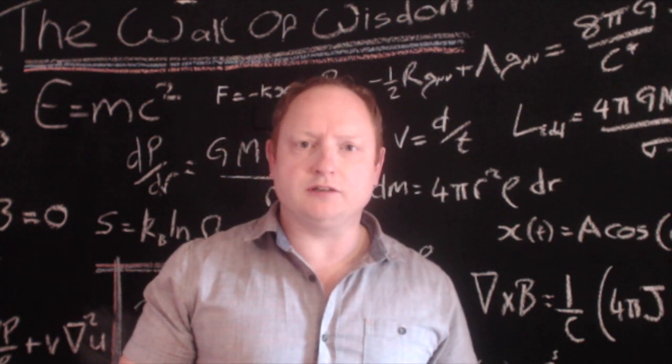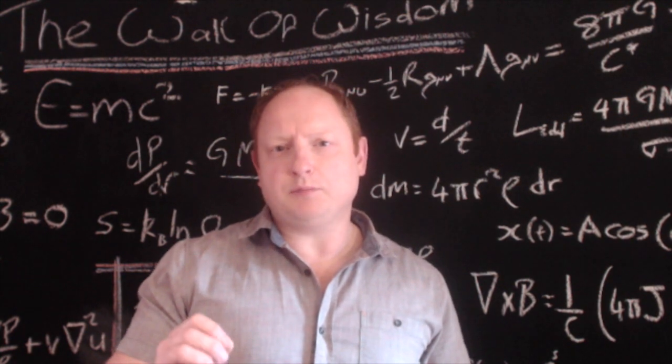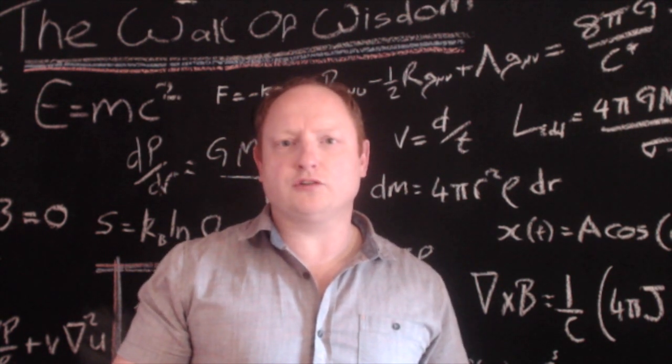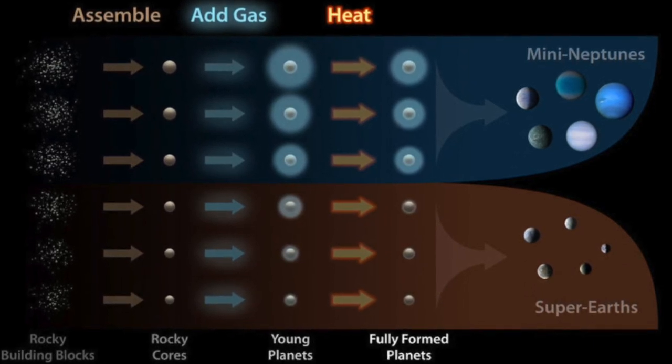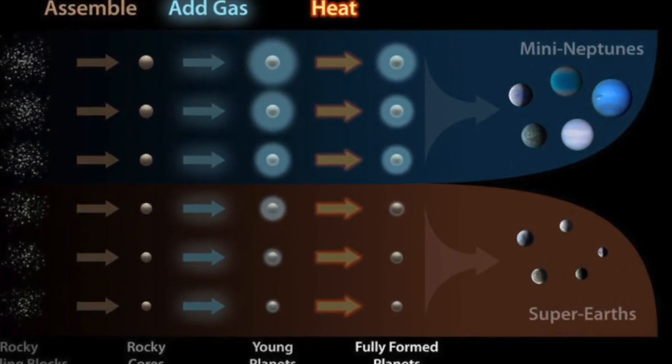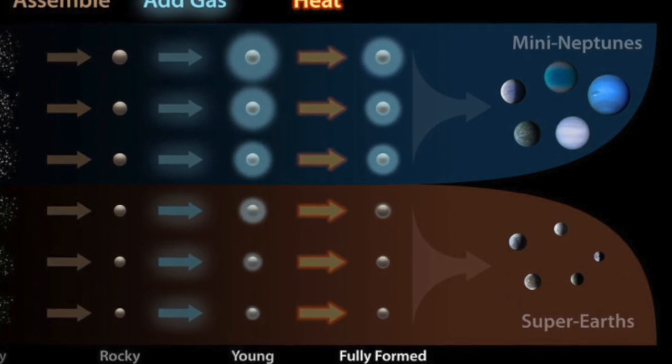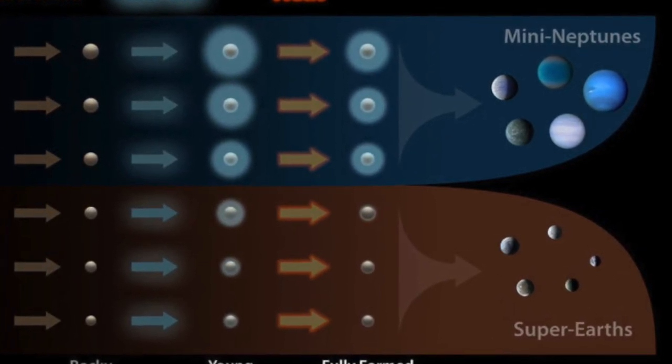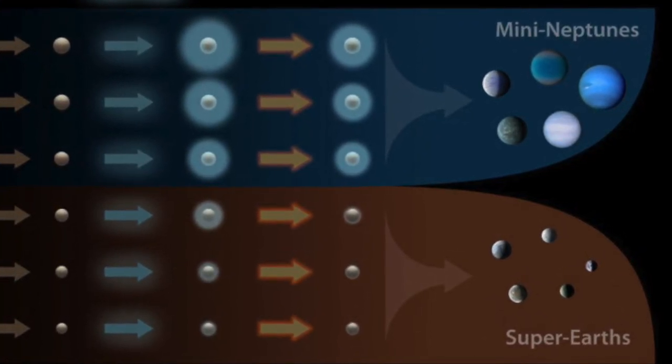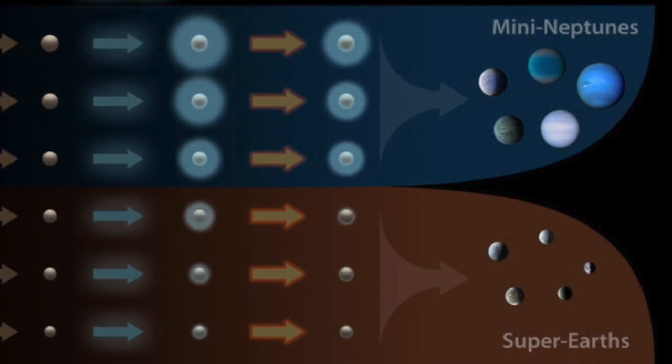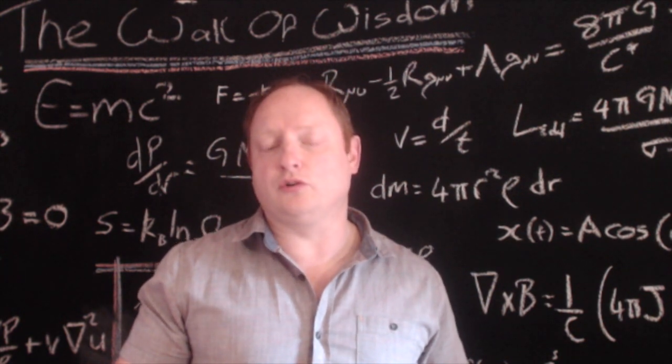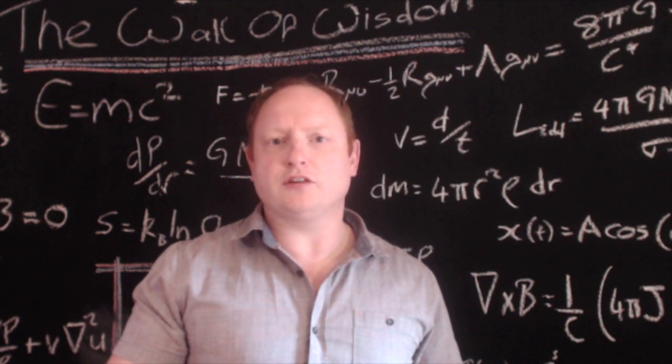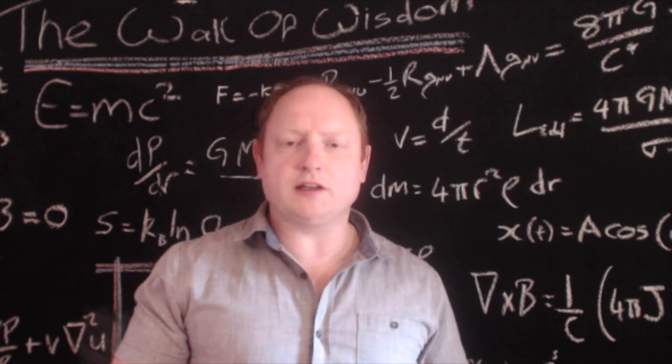Kepler confirmed that the diversity of planets was far greater than what we were accustomed to in the solar system, more so than we ever imagined. In particular, the planetary demographics we uncovered told us that super-Earths and mini-Neptunes, which are a class of planets with masses in the range of 2 to 10 times that of the Earth, were the most common outcome of the planet formation process in our galaxy.